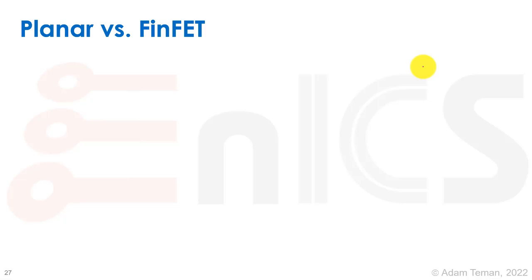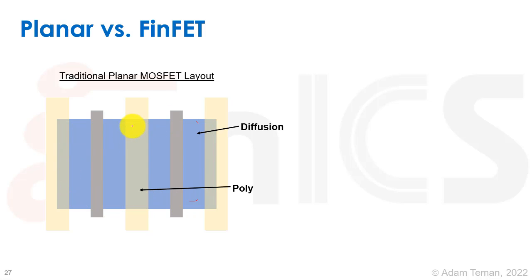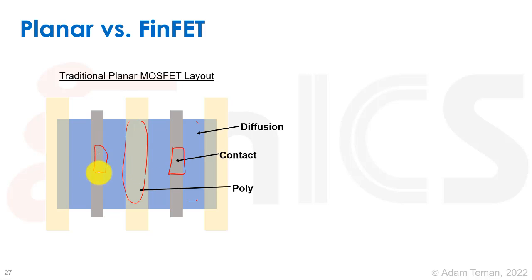To start looking at this, I want to show you a planar transistor versus a FinFET transistor. Traditional planar transistors look something like this — we had our poly over diffusion. These are our poly layers and these are our diffusions. The poly over diffusion creates the transistor, and then we had our contacts, which would actually be more like a square rather than this type of structure.